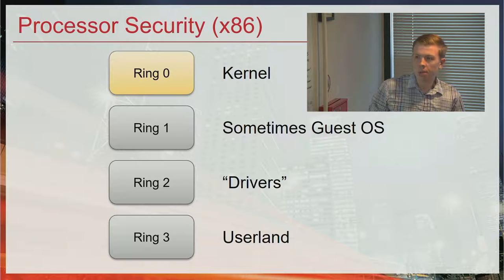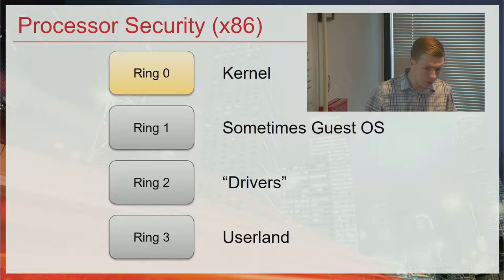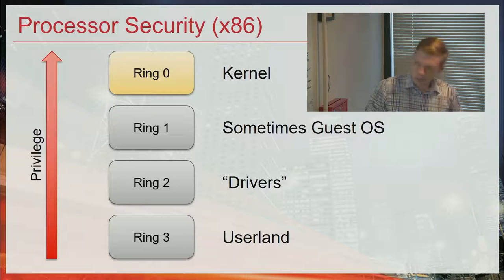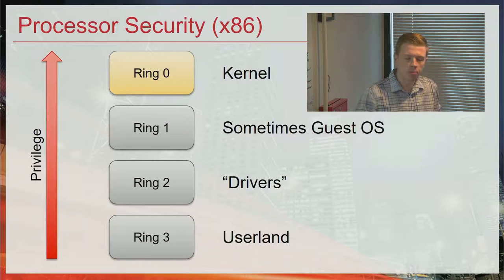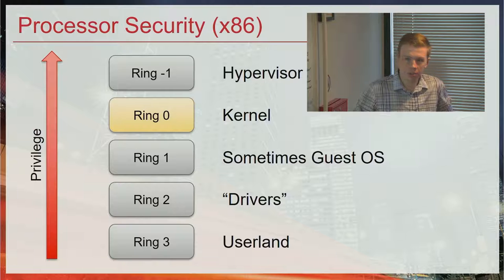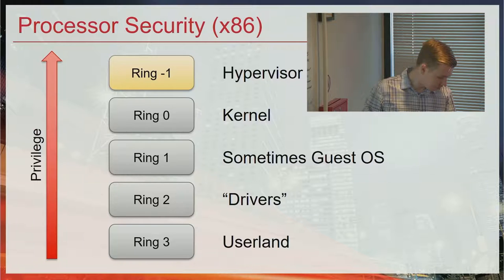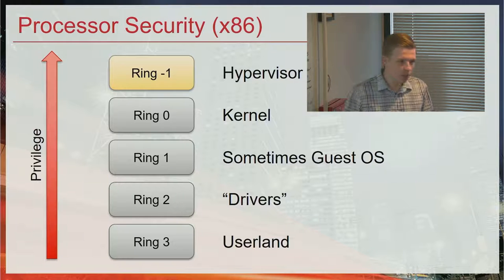That runs into the question: what happens if you have secrets in ring 0 but you're worried about ring 0 being compromised? Since we have ring 3 as the least privilege and ring 0 as the most privilege, we can't get more privilege than ring 0. So what if we just make a more privileged ring and call it ring minus 1? Then instead of keeping our secrets in ring 0, we put them in ring minus 1. So if we have a compromised ring 0, we still don't have secrets exposed.